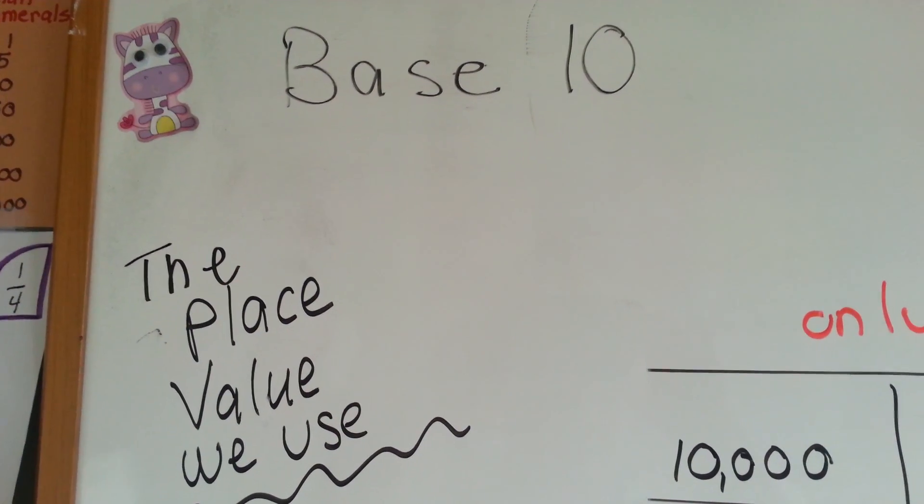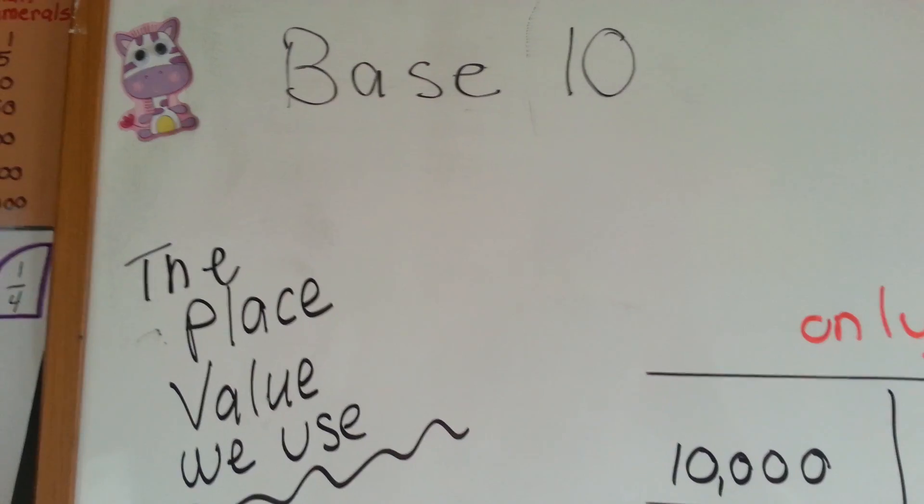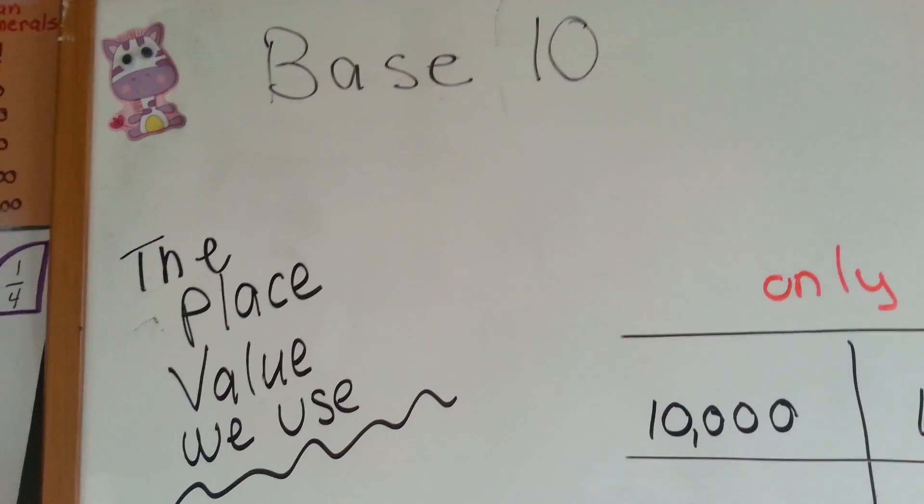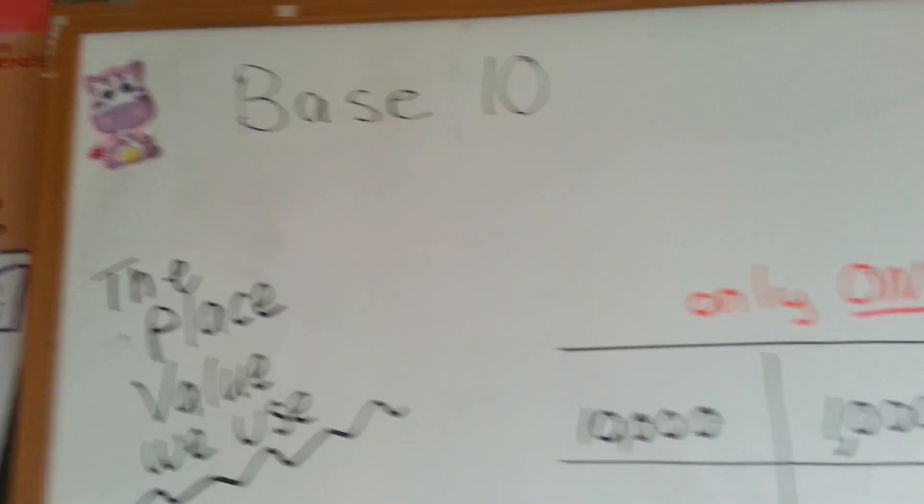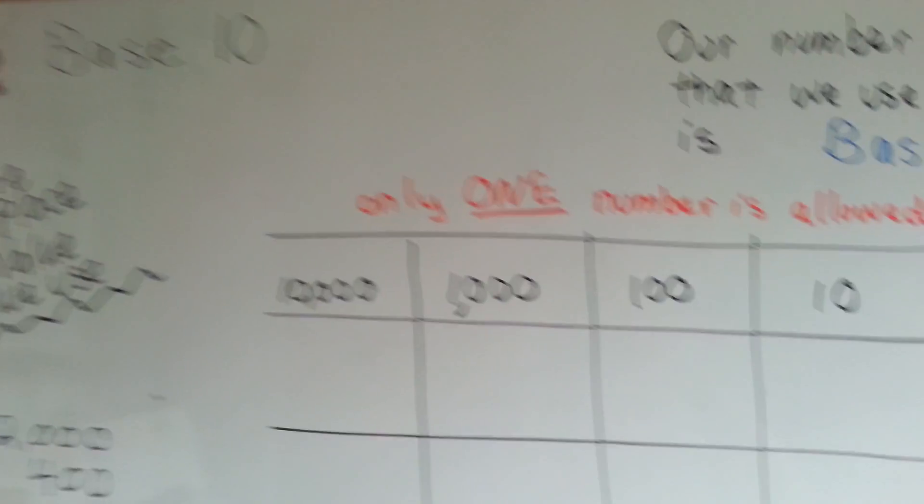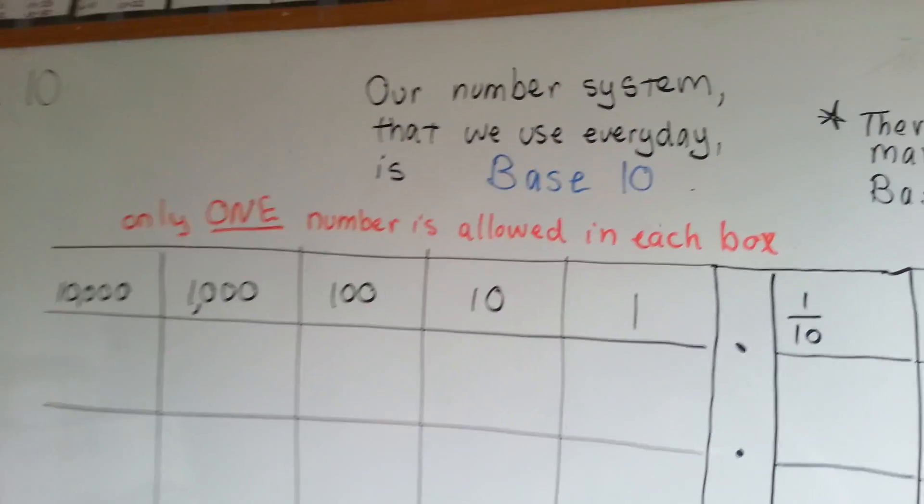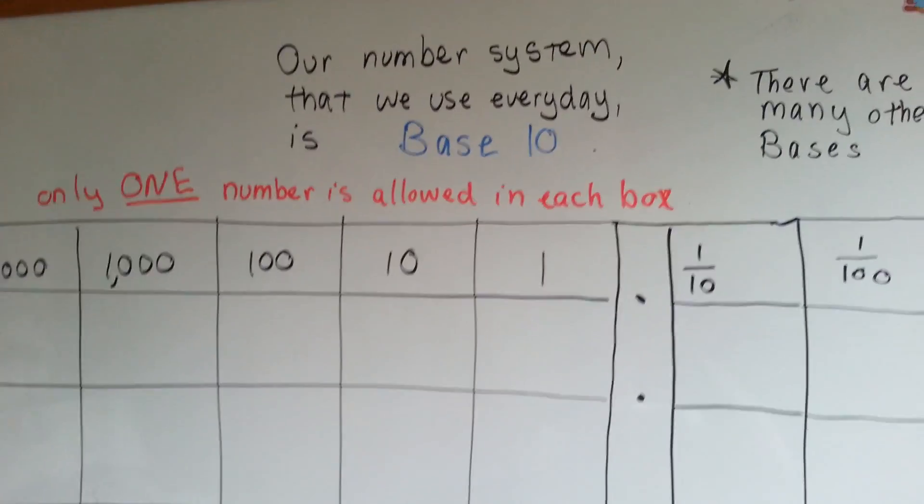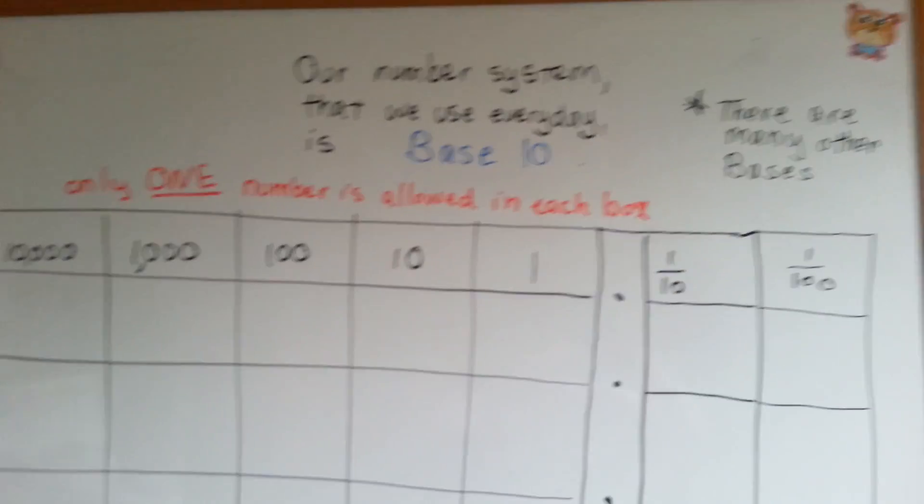Base 10, the place value that we use. In everyday regular place value that we use in math, we use base 10. That's our number system that we use every day. There are many other bases.